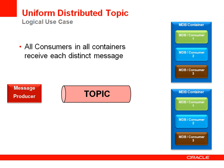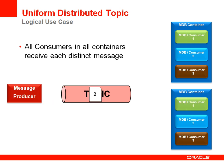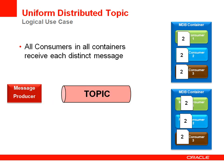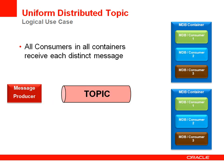There are two models for the pub/sub use case with distributed topics. The first is called a uniform distributed topic. In this model, messages are delivered to each consumer within each MDB container. This means that when you use uniform distributed topics, you will get a copy of each message on each server, so your application should be designed to handle this.